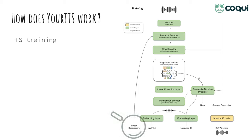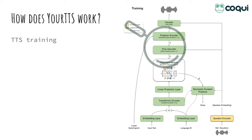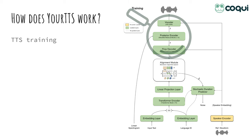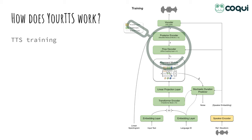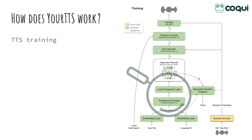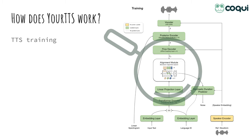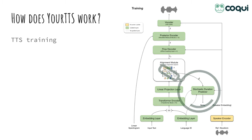At training time, we feed the linear spectrogram of a dataset sample to a posterior encoder, whose role is to generate a shared audio representation — the latent variable Z — for the rest of the model to learn from. The flow-based decoder transforms Z into ZP. On the other side, the text encoder computes pseudophonemes that should match ZP minus the alignment. We use an algorithm called MAS to find the best possible alignment between ZP and the pseudophonemes, and that alignment constitutes the training data for the duration predictor. One experiment in Your TTS is SCL — Speaker Consistency Loss — where we use the speaker encoder to measure how close the generated voice and the reference voice are during training, nudging the model toward better similarity.